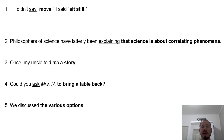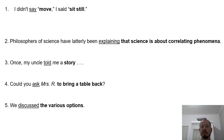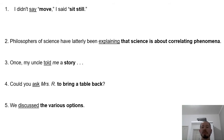Now I have an exercise to practice, because it's really easy. 'I didn't say move. I said sit still.' So 'I' is the sayer. 'Didn't say' is the verbal process — 'say' is the verbal process. 'Move' is the verbiage — what is said. Again, 'I' is the sayer; 'said' is the verbal process; and 'sit still' is the verbiage — what is said.